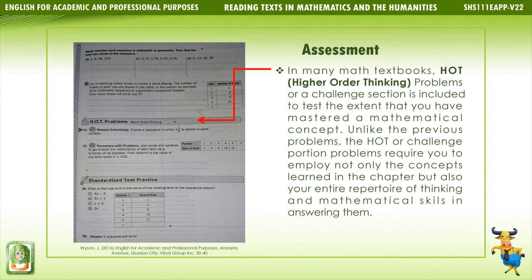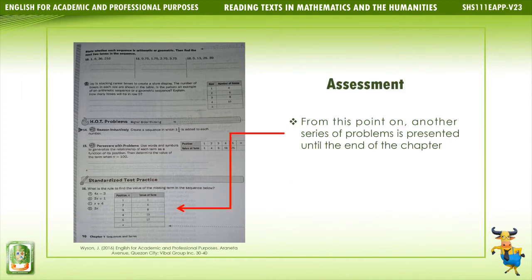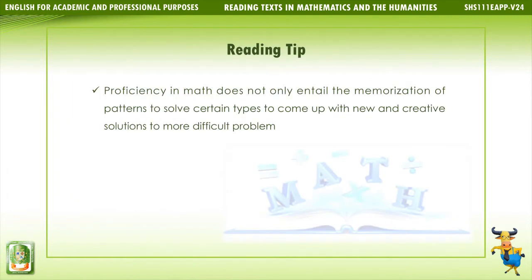In many math textbooks, higher-order thinking (HOT) problems or a challenge section is included to test the extent to which you have mastered a mathematical concept. Unlike previous problems, the HOT or challenge portion requires you to employ not only the concepts learned in the chapter, but also your entire repertoire of thinking and mathematical skills. From this point on, another series of problems is presented until the end of the chapter. Proficiency in math involves coming up with new and creative solutions to more difficult problems.